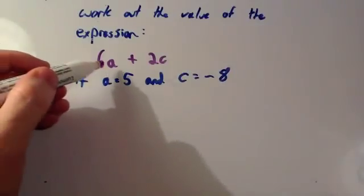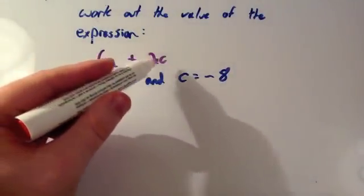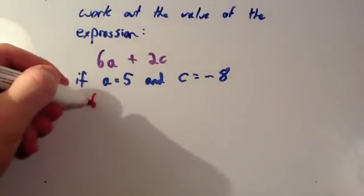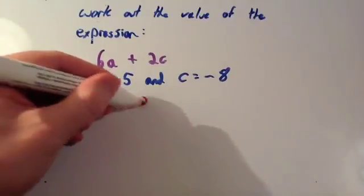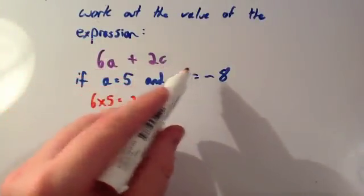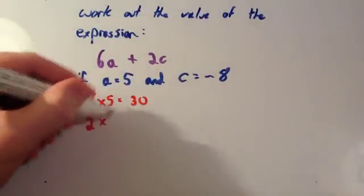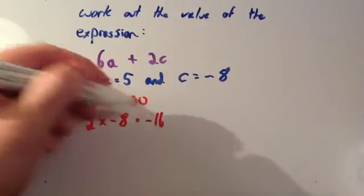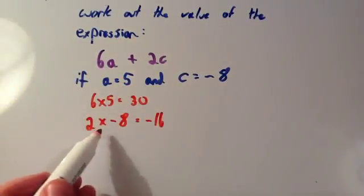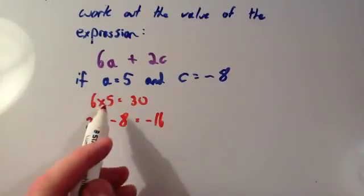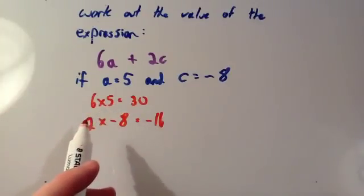Okay, so this says 6 times a plus 2 times c. Well, 6 times a, well, 6 times 5, 6 times 5 equals 30. And we're going to add on to that 2 times c. Well, 2 times negative 8 equals negative 16. So we've done 6 times a, and we've done 2 times c. And we're going to add those together.